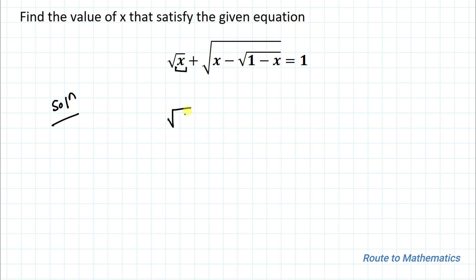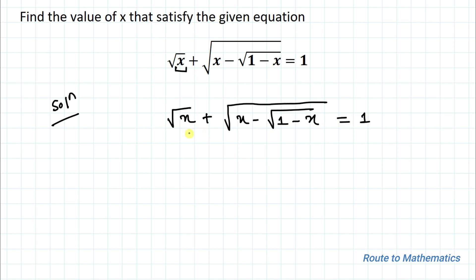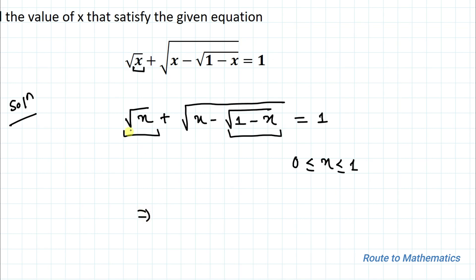We have given: √x + √(x − √(1 − x)) = 1. One thing you can notice is that we have √x as well as √(1 − x). The presence of these two terms shows that the value of x must vary from 0 to 1.